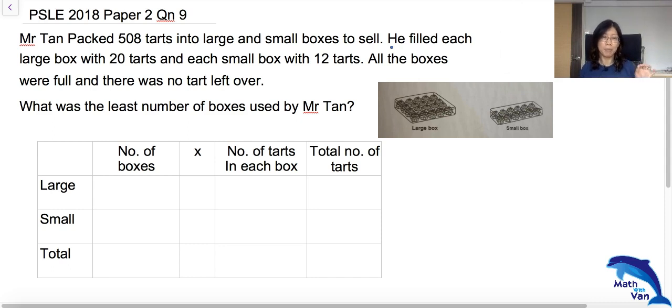Something similar came out in PSLE last year. This question is from PSLE 2018 Paper 2 Question 9. Mr. Tan packed 508 tarts into large and small boxes to sell. He filled each large box with 20 tarts and each small box with 12 tarts. All the boxes were full and there was no tarts left over. What was the least number of boxes used by Mr. Tan?